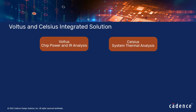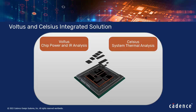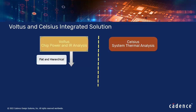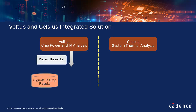The Voltus-Celsius solution performs electrothermal co-analysis of a single or multiple ICs in a full system environment where IC, package, heat sink, fan, and board can be simulated together. When a 3D IC design is ready for implementation, Voltus is invoked for IR drop flat and hierarchical analysis of the multi-die, interposer, and PCB.